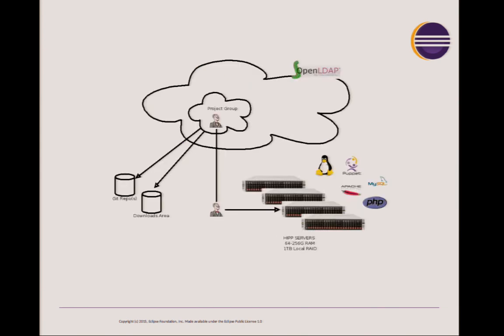How we actually went about setting up the Hudson-per-project system involved no fancy software and no big framework — just off-the-shelf components from Linux and other repositories. All of the user accounts at Eclipse.org are in an LDAP directory. Each project at Eclipse has a user, which we consider a participating member of the project. That user is a system account — not somebody who actually logs in — but that system account is the one running the Hudson Java process. Since it's a user account, we can give that account access to the Git repositories for tagging after a build, and access to the downloads area for promoting build artifacts.